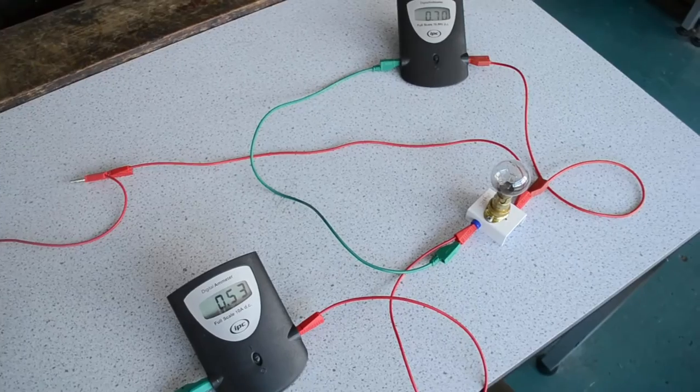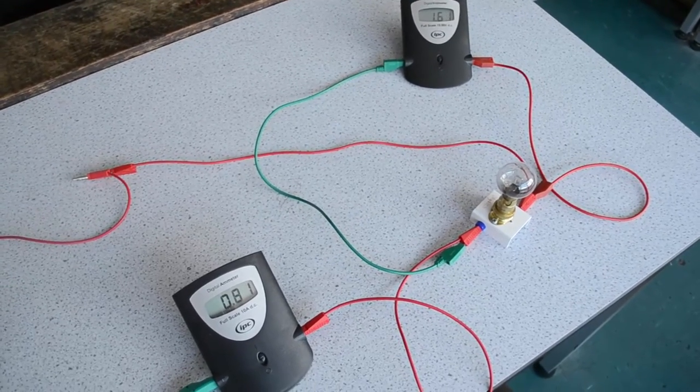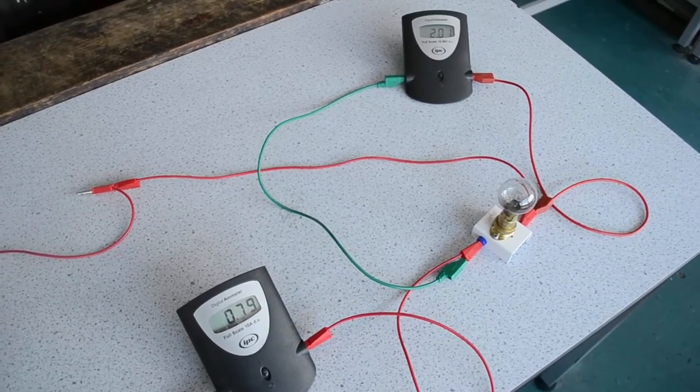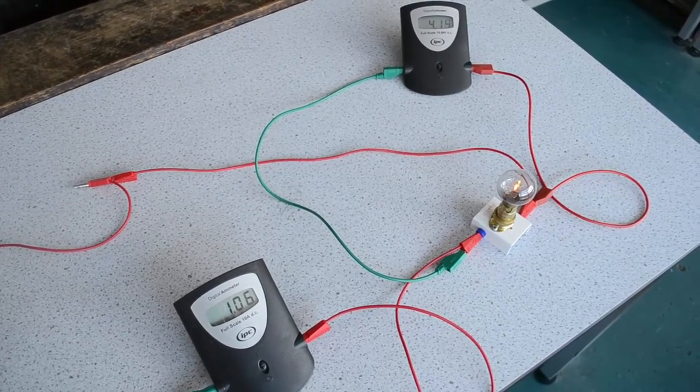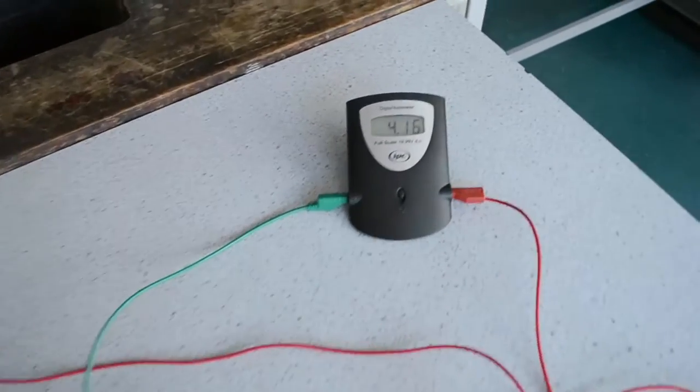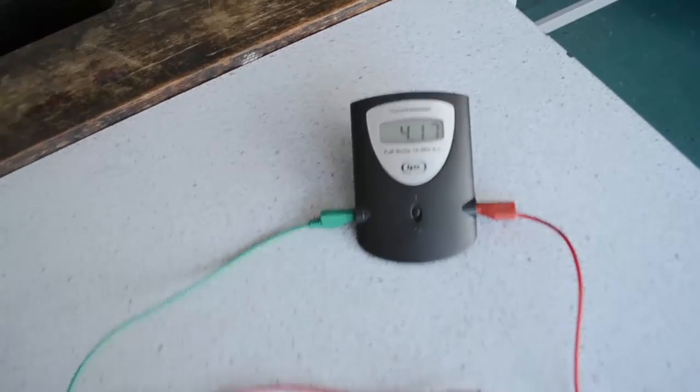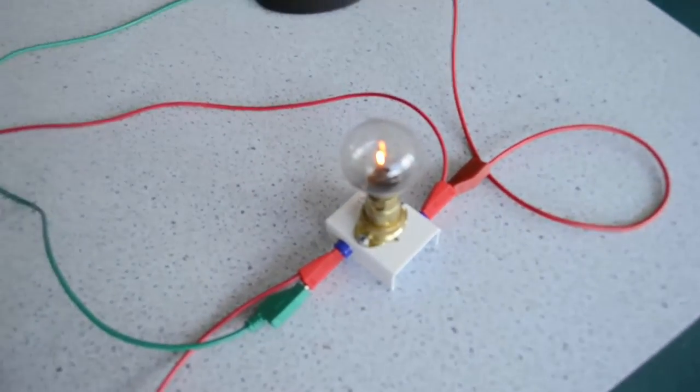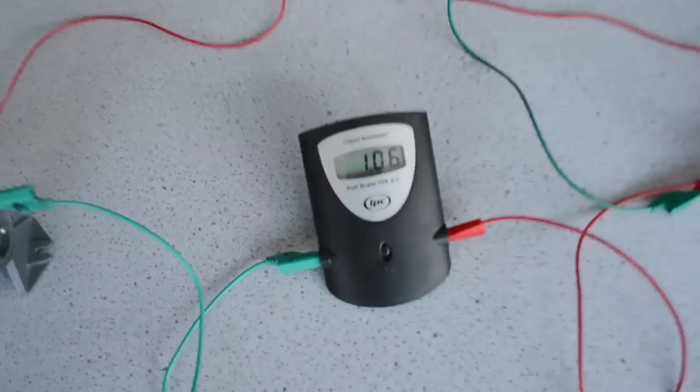Again, record this. And we keep adjusting the rheostat and taking readings. You can see here that now we've reached around about 4 volts across the light bulb. The light bulb is dimly lit. There's about 1.06 amps passing through it.